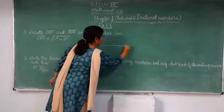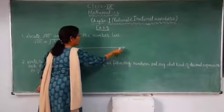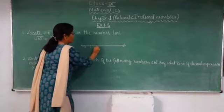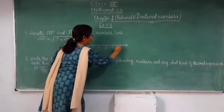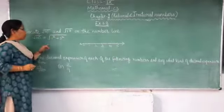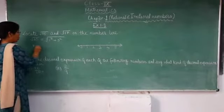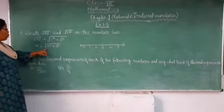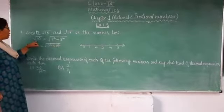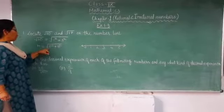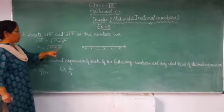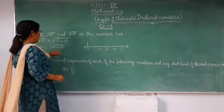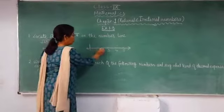We will draw a number line with arrows on both sides. Since these are positive numbers, we start from 0, then 1, 2, 3, 4, and 5. We know that in Pythagoras theorem, h² = p² + b², meaning hypotenuse² = perpendicular² + base². Here we divided √10 as 1² + 3², so perpendicular is 1 and base is 3. At point 0 we will draw a 1 cm perpendicular line, and the base goes from 0 to 3.